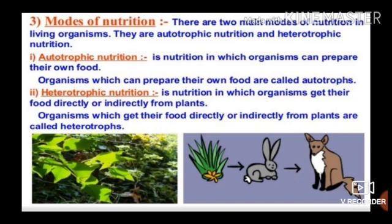Auto means own; trophic means nutrition. Autotrophic nutrition is nutrition in which organisms can prepare their own food. Organisms that can produce their own food and thus nourish themselves are called autotrophs.